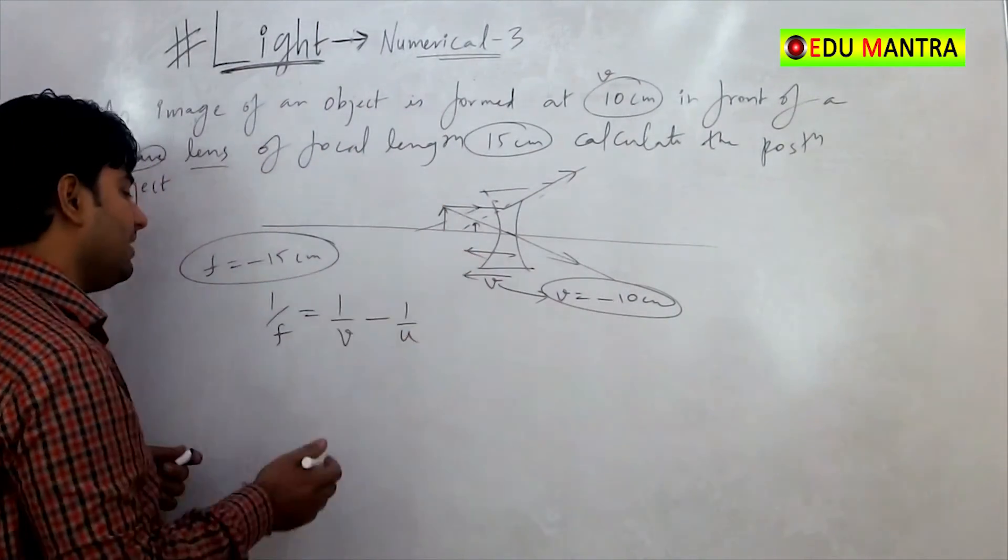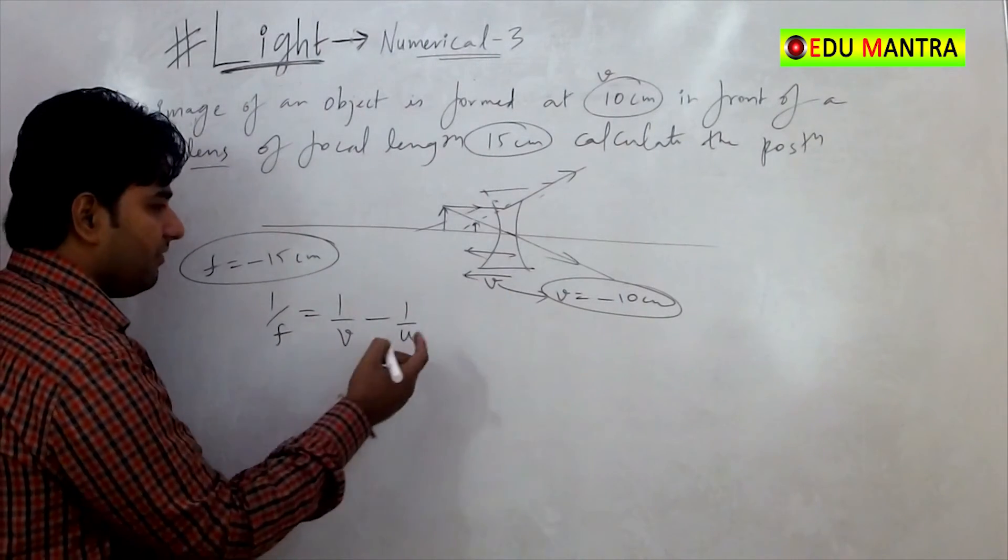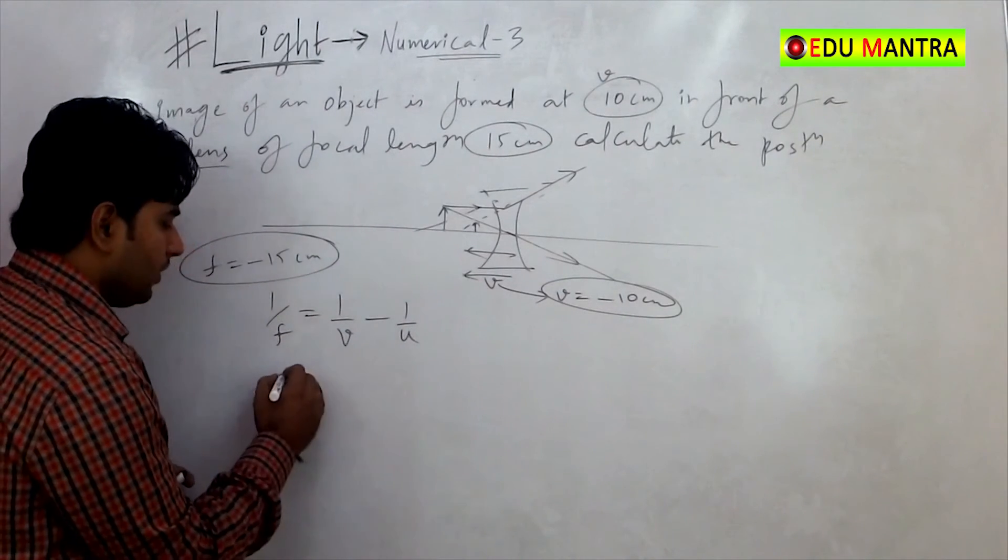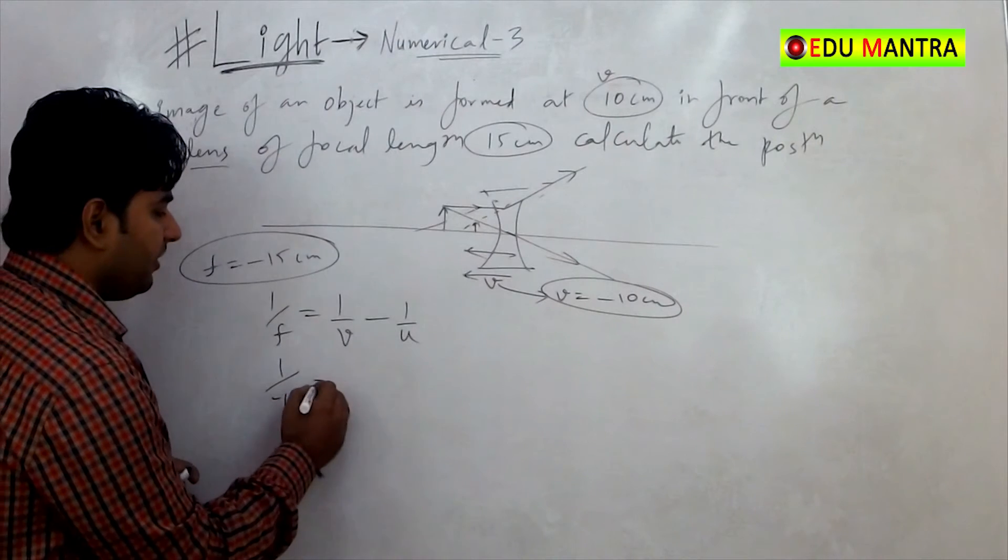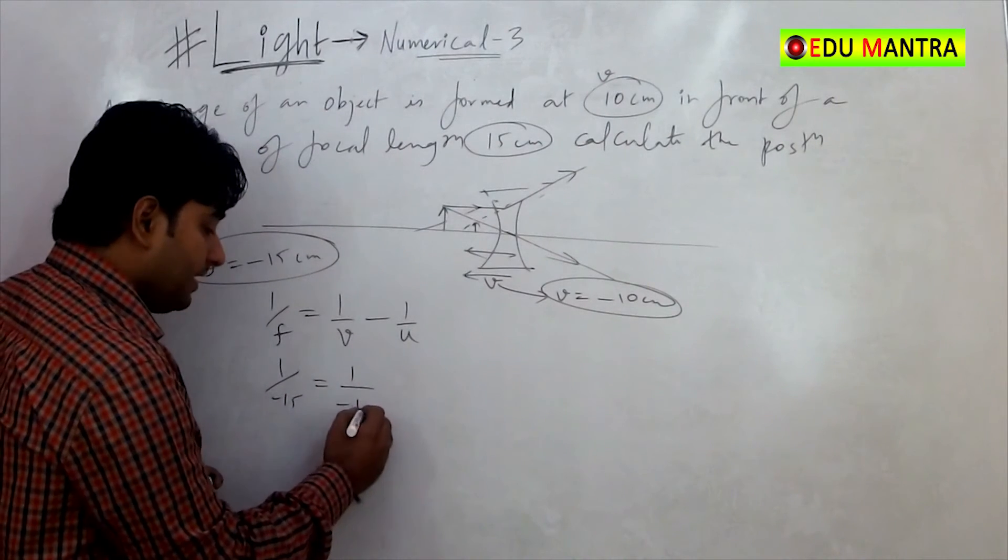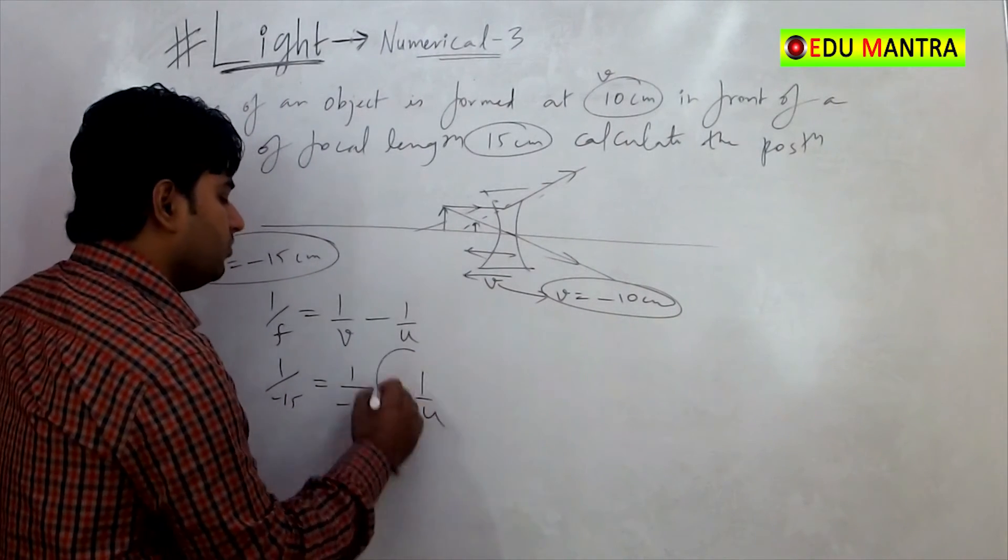We can find U, so that's 1 by minus 15 is equal to 1 by minus 10 minus 1 by U.